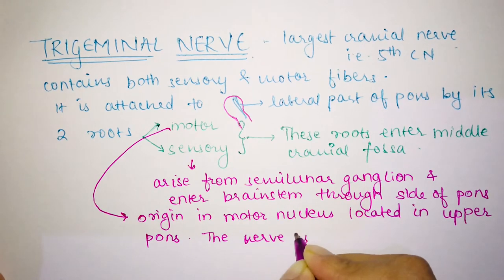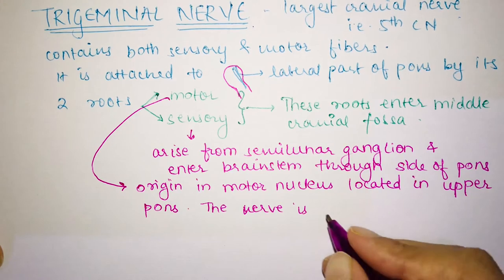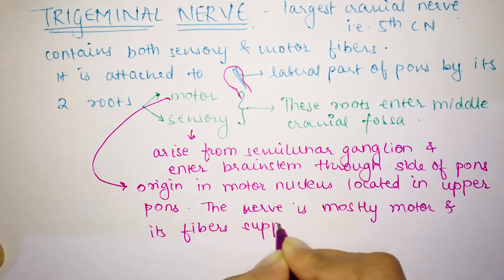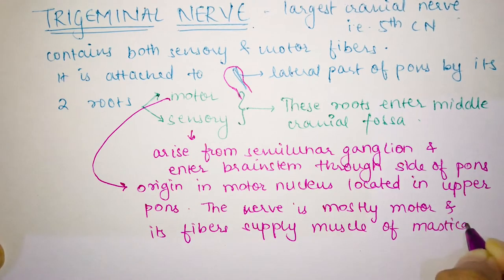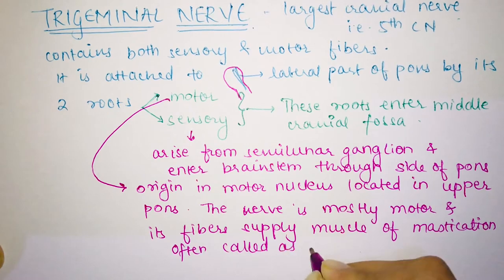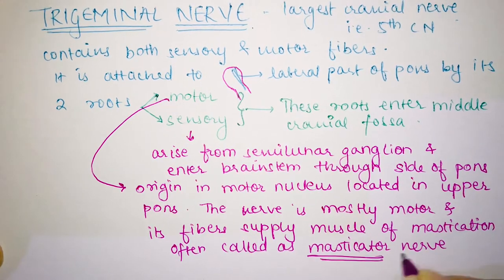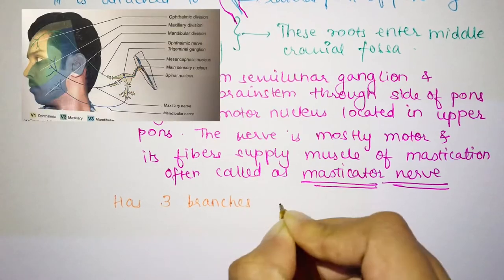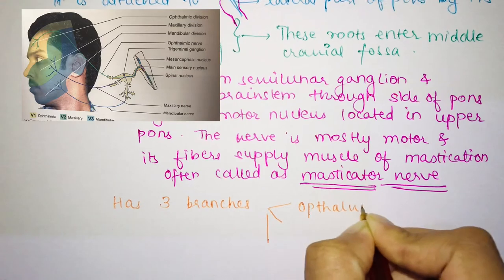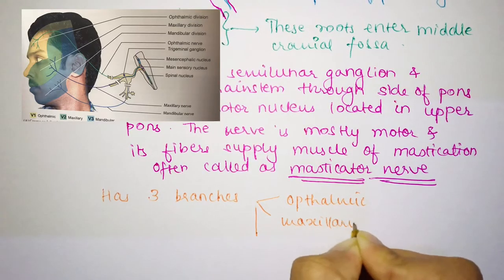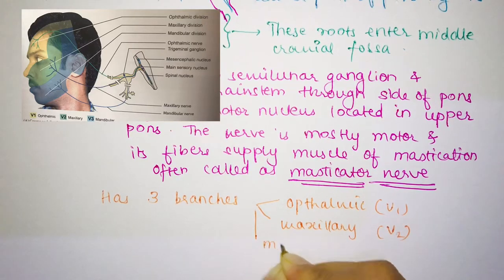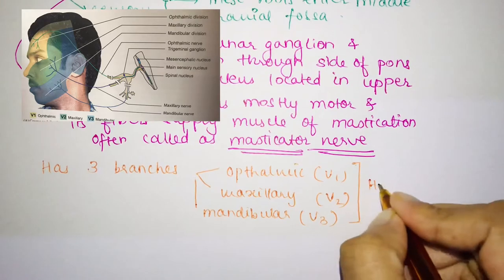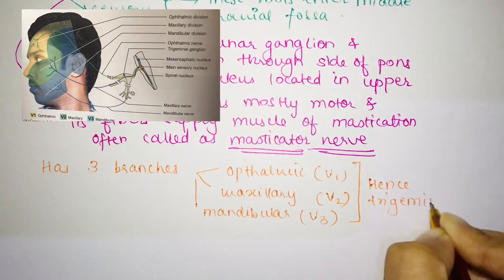The trigeminal nerve is mostly a motor type of nerve, though it has a sensory part too. Since it mainly supplies the muscles of mastication, it is known as the masticator nerve. It has three branches: ophthalmic (V1), maxillary (V2), and mandibular (V3). It is called 'trigeminal' because 'tri' means three.